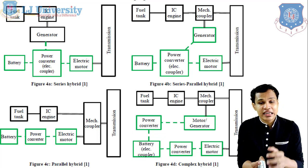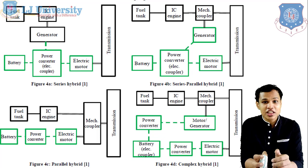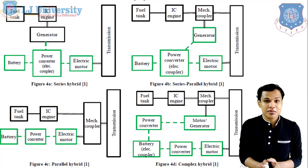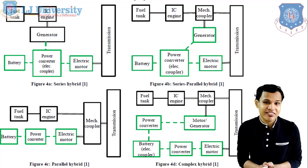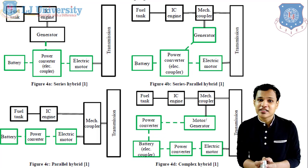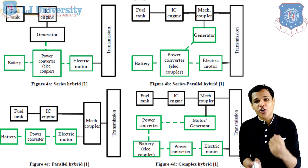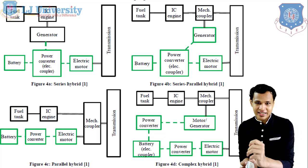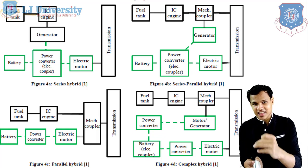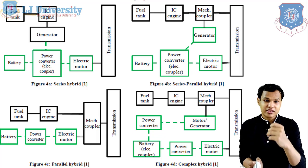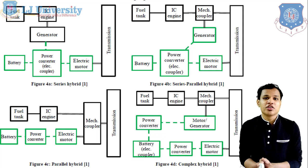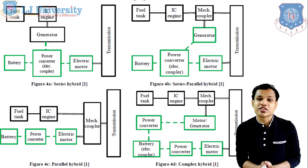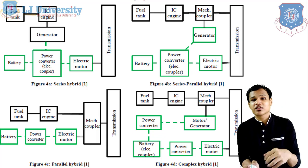Heavy vehicles have the space to arrange all the components — the generator and complex components in this system. So series hybrid can be used in heavy vehicles. The parallel hybrid system is better suited for normal cars or four-wheelers, because losses are lesser and the number of components is also fewer among all four topologies. So the parallel system is the most widely used system in our four-wheelers or cars.